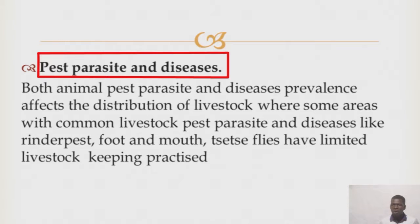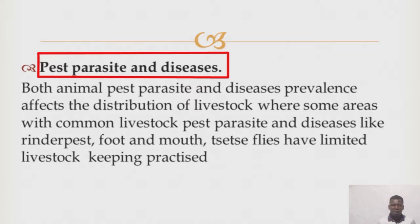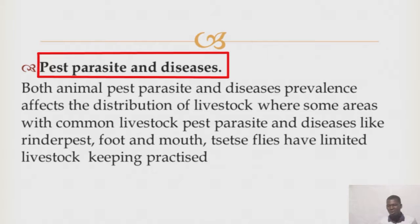Then we come to parasites. We have both external and internal parasites — we have ticks, we have liver fluke, we have protozoa, we have lungworm, tapeworm. For diseases, we have both crop and animal diseases. Some animal diseases are rinderpest, east coast fever, brucellosis, trypanosomiasis. For crop diseases, we have cassava brown spot, tomato brown spot, cassava mosaic, and maize streak — all those are crop diseases.